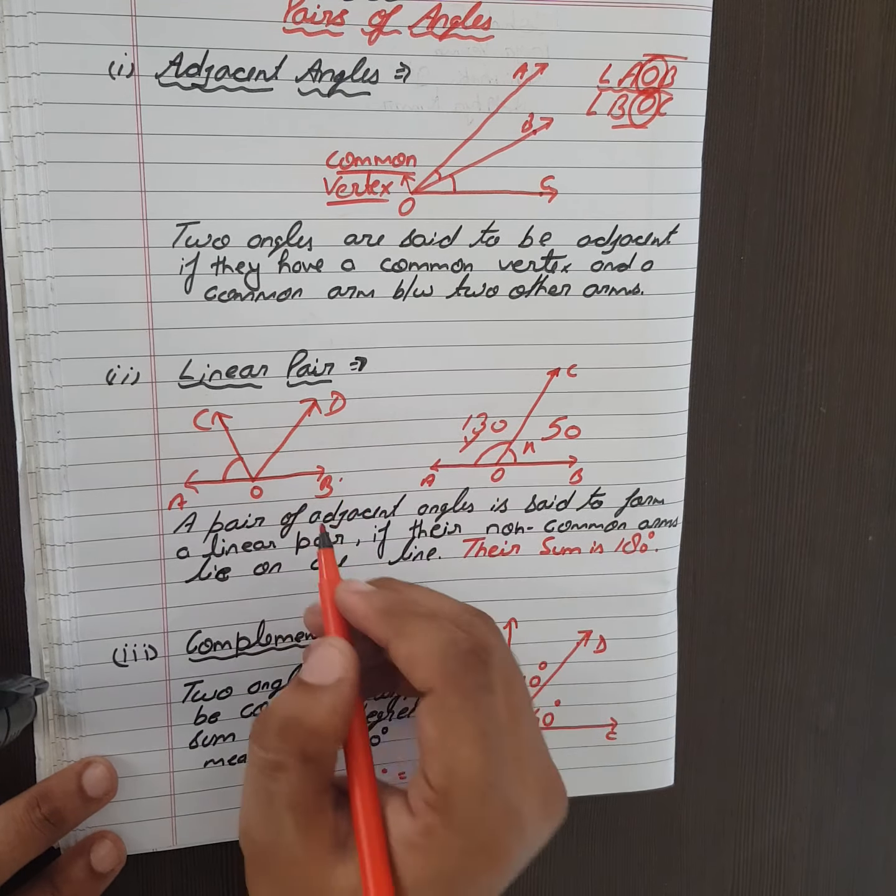The first is adjacent angles. Two angles are said to be adjacent if they have a common vertex and a common arm between two other arms. Therefore, neighbor angles like angle AOB and angle COB, or you can say BOC, they are adjacent angles.